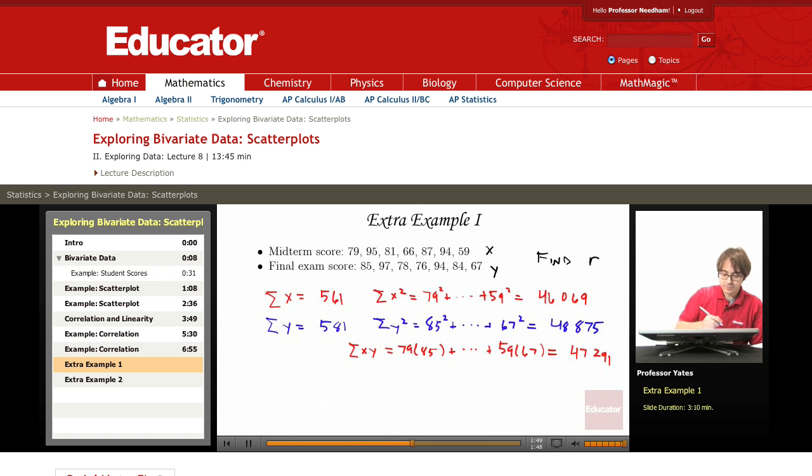So now I want to find my correlation. So I'm taking this 47,291 minus 561 times 581, that quantity divided by how many pairs do we have? 1, 2, 3, 4, 5, 6, 7 pairs.